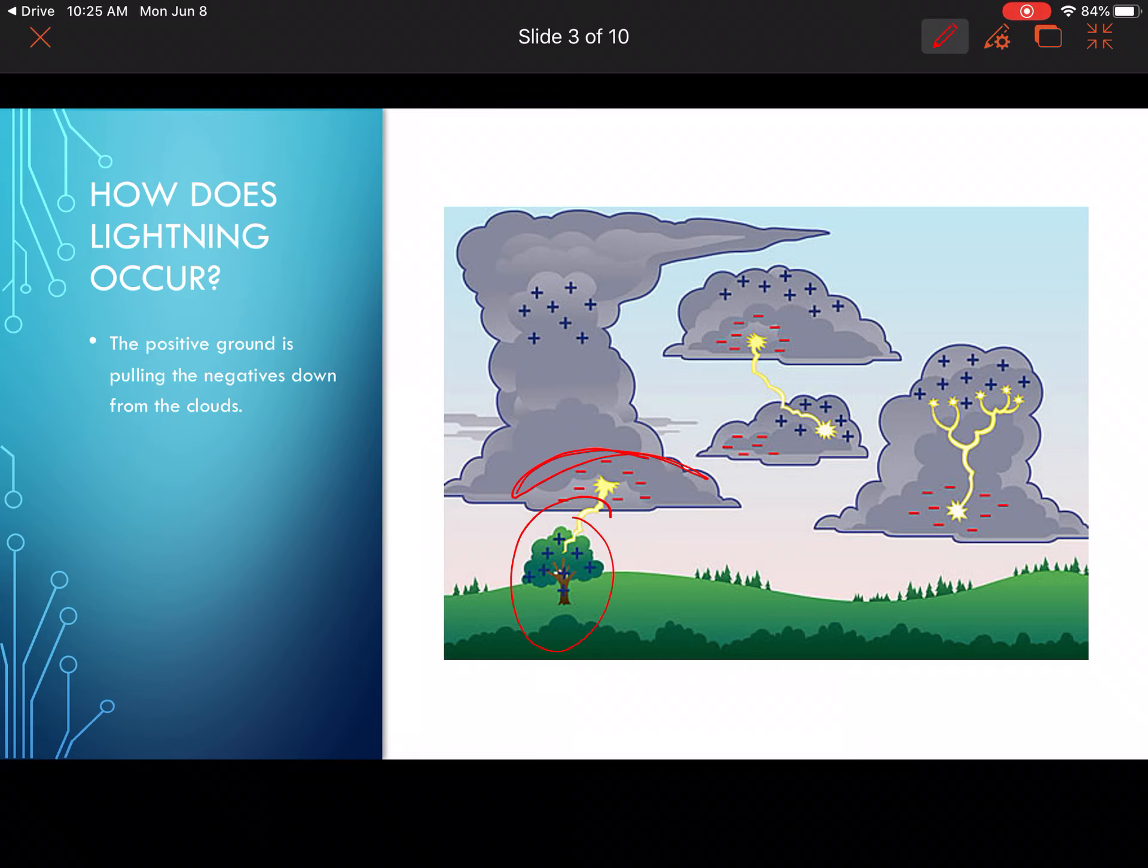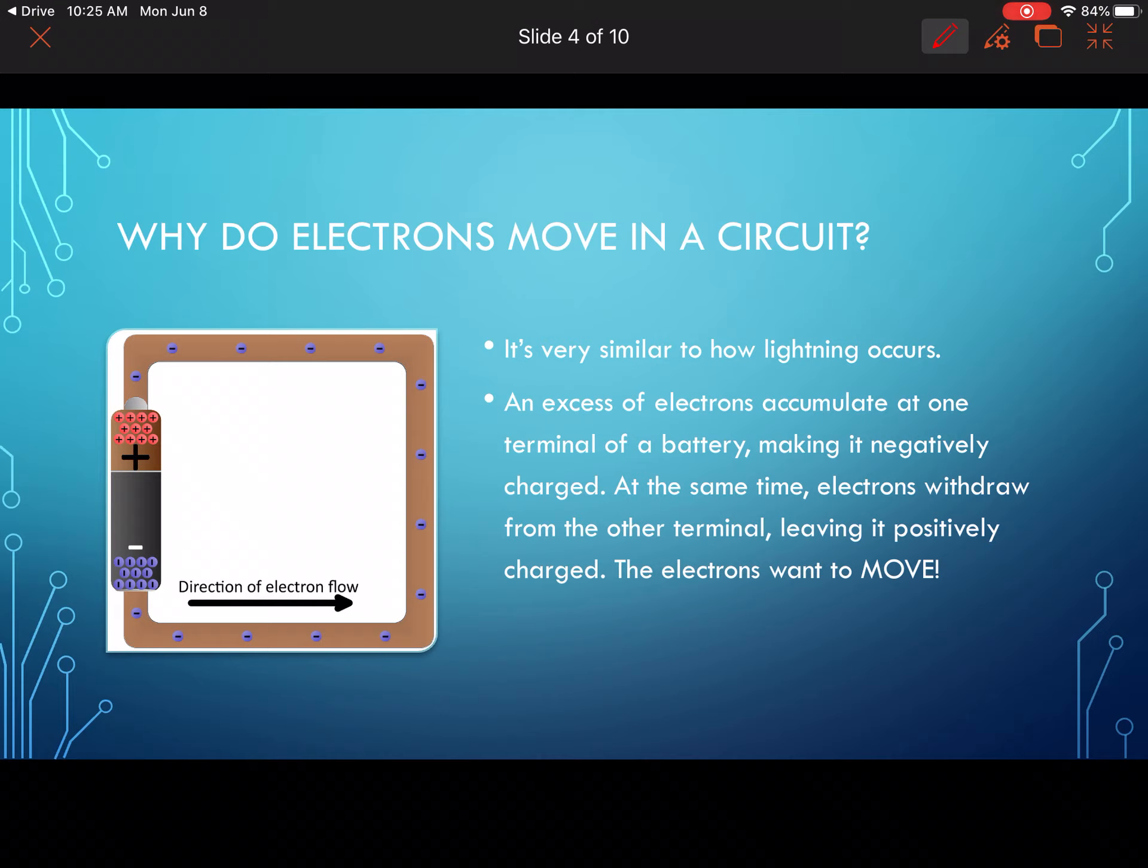So this is how these charges work; this is how electricity works. Okay, so why do electrons move in a circuit? That's what we just discussed - it's very similar to how lightning works. In your notes here there's a few fill-in-the-blank things that you need to show, but let's just take a look at this diagram. We've got our negative end here and we've got the electrons then moving around this circuit, all the way around, because they're attracted to that positive end there.